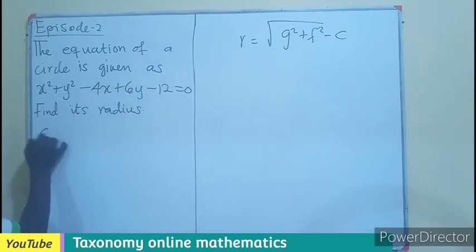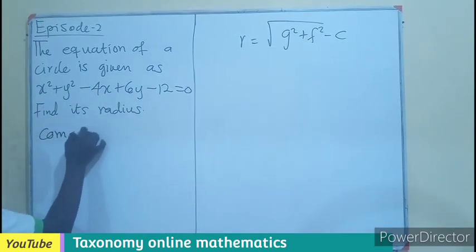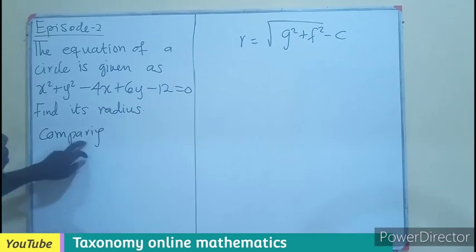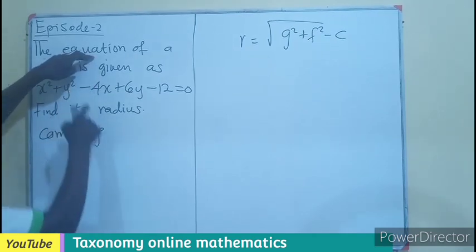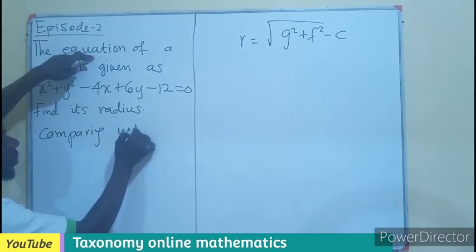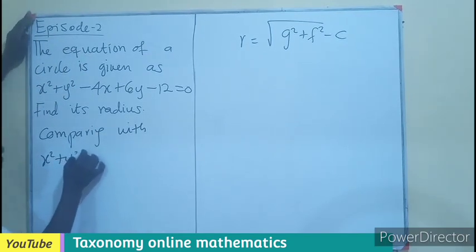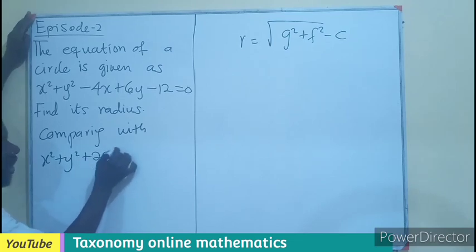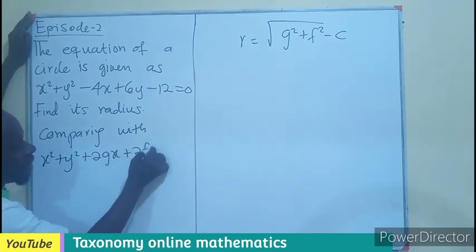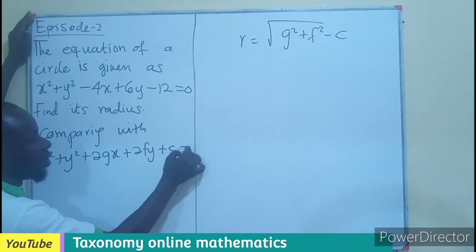What we do is compare this equation given to us with the original equation, which is x squared plus y squared plus 2gx plus 2fy plus c equals 0.